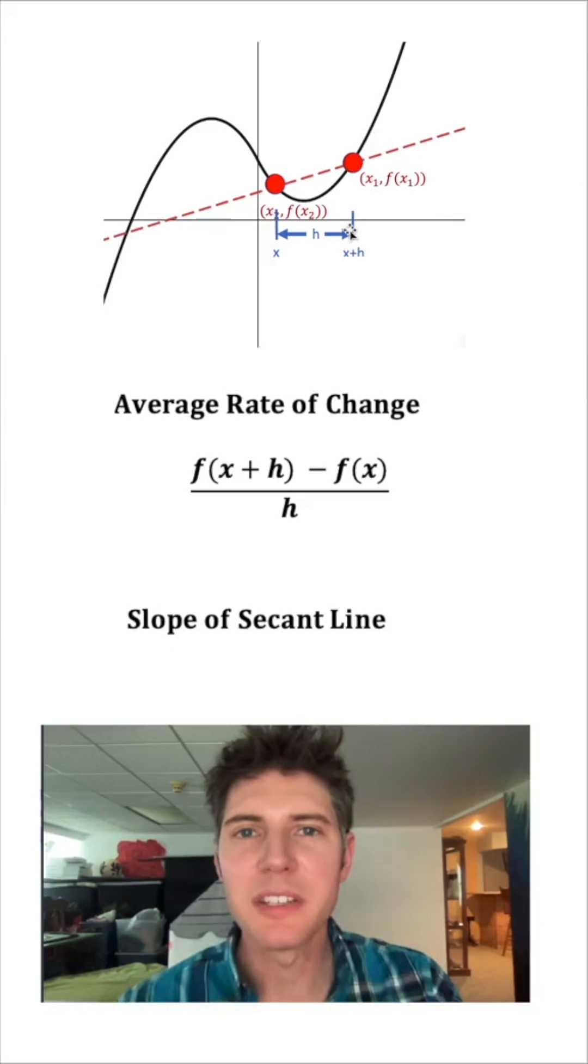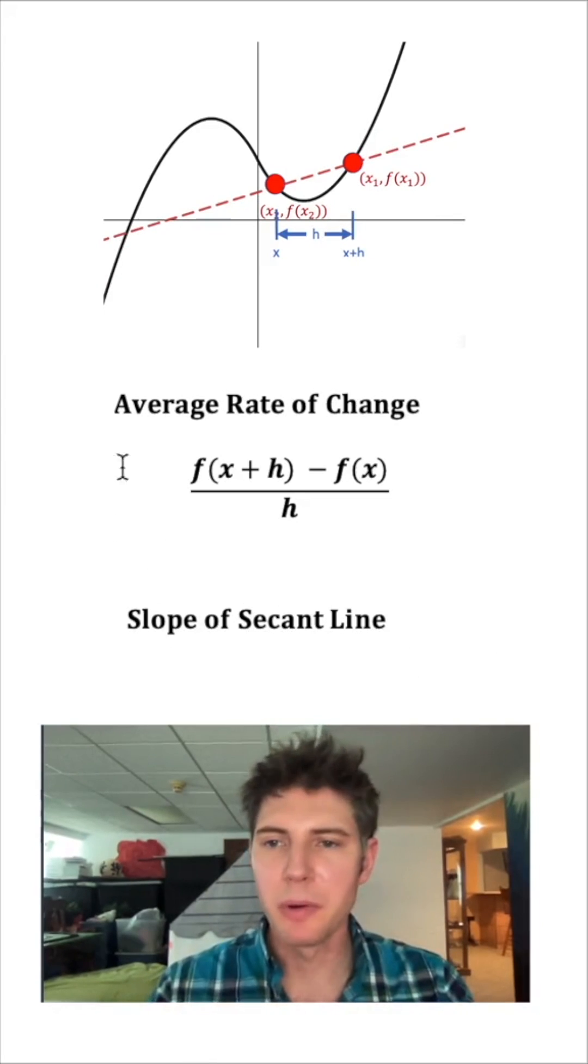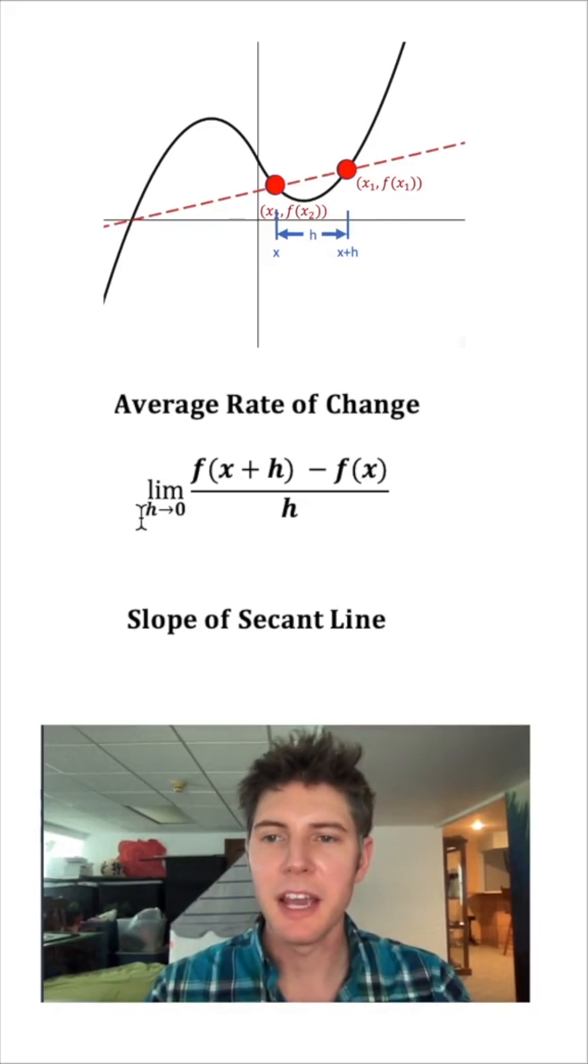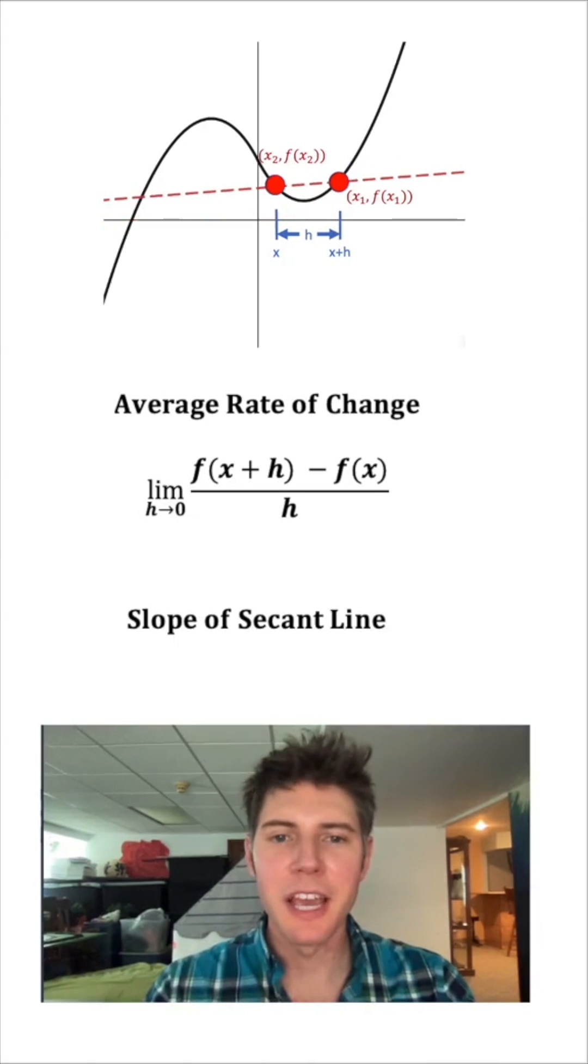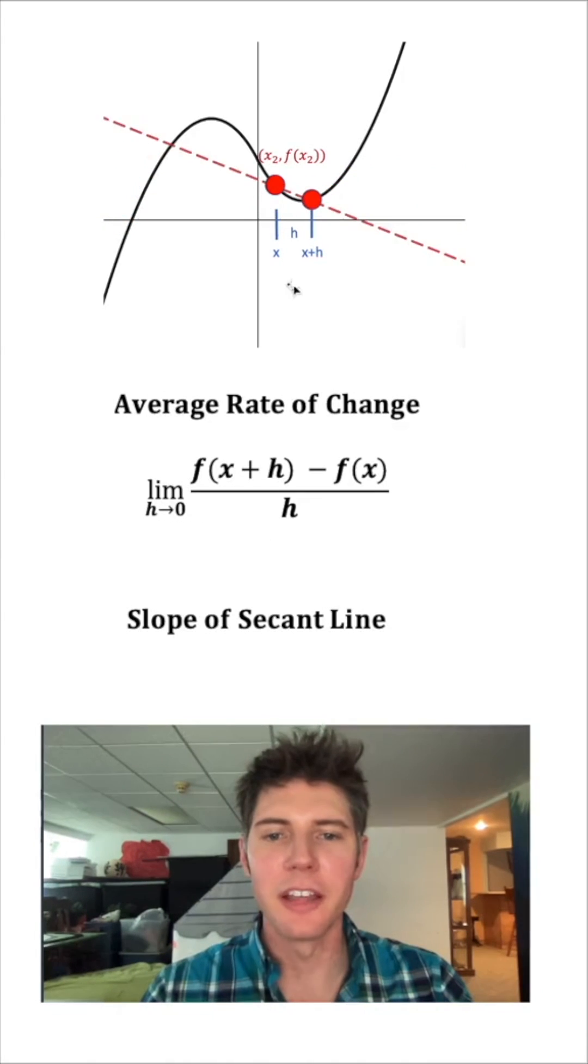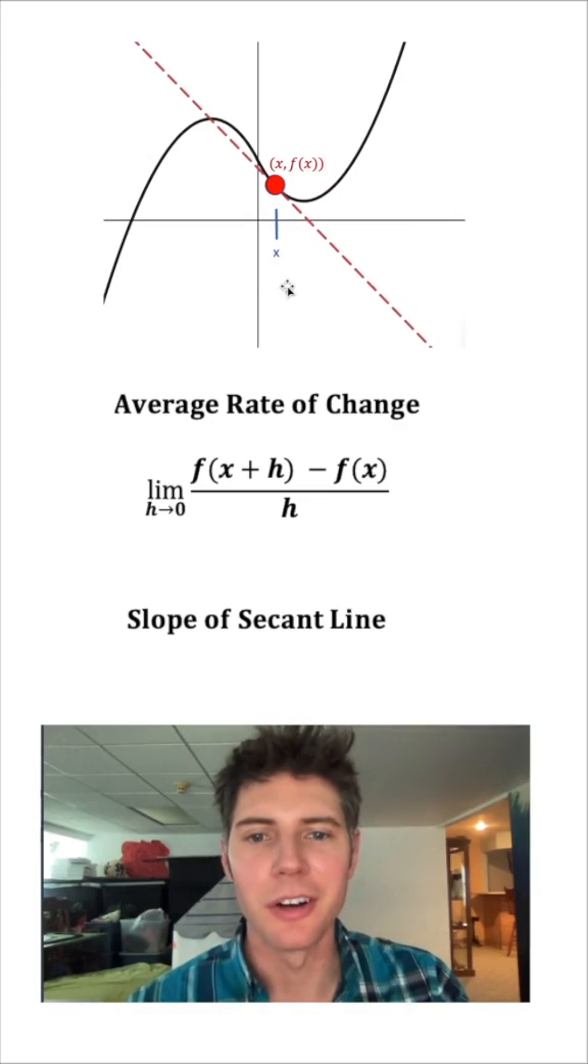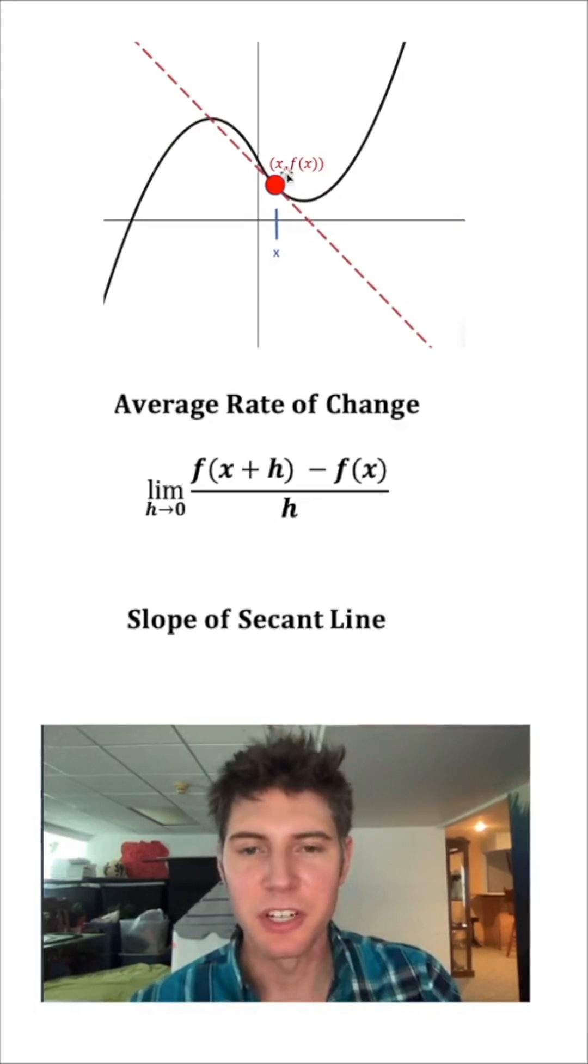Let's go all the way until h gets to 0. And the way we write that in our formula is we write the limit as h approaches 0. And we're going to keep shrinking the h and getting the points closer and closer together until we get to h equals 0.